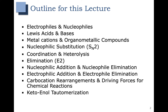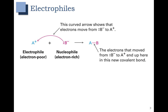Before we do that we're going to need to define what electrophiles and nucleophiles are. An electrophile is an electron-poor species. The suffix 'phile' means loving, so electrophile technically means electron loving. That means that it is an electron-poor species that wants electrons.